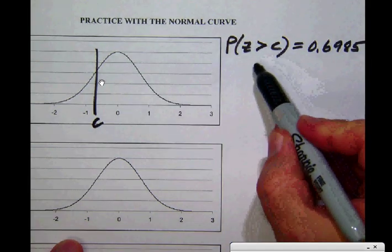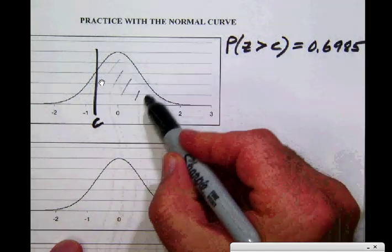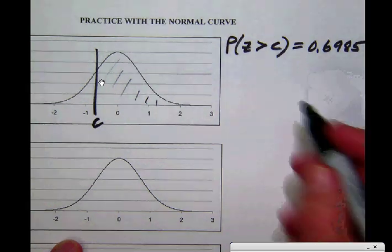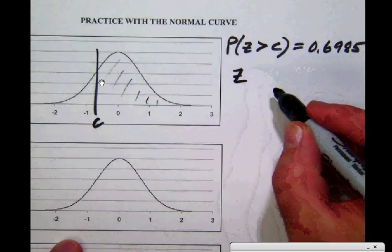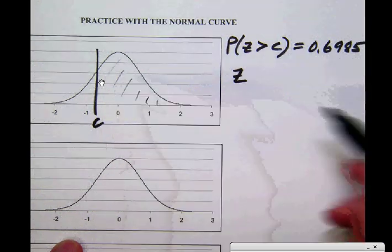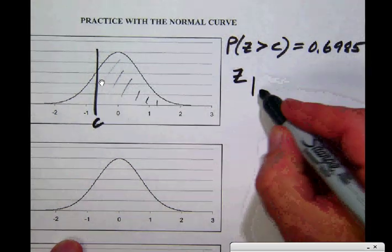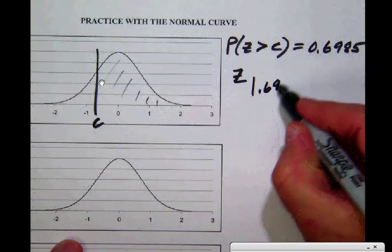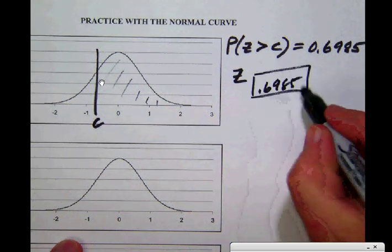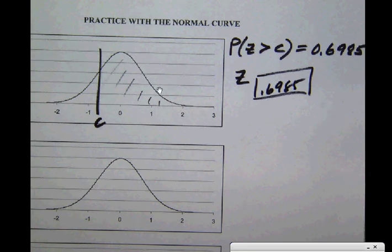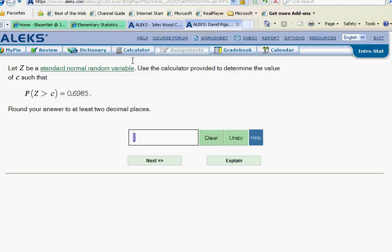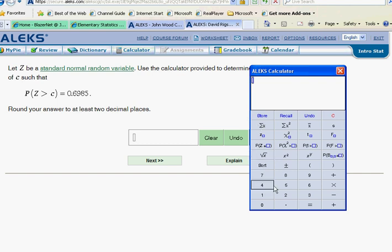Notice that the area under the curve to the right of c is this value here, and that is exactly what the z-button likes. It likes it when we have the area under the curve to the right. So what I can simply do here is I can take the z of 0.6985, and I'll get my answer directly. Simply go to the calculator, hit the z-button of 0.6985, and we'll have the answer immediately. That's two decimal places, negative 0.52.